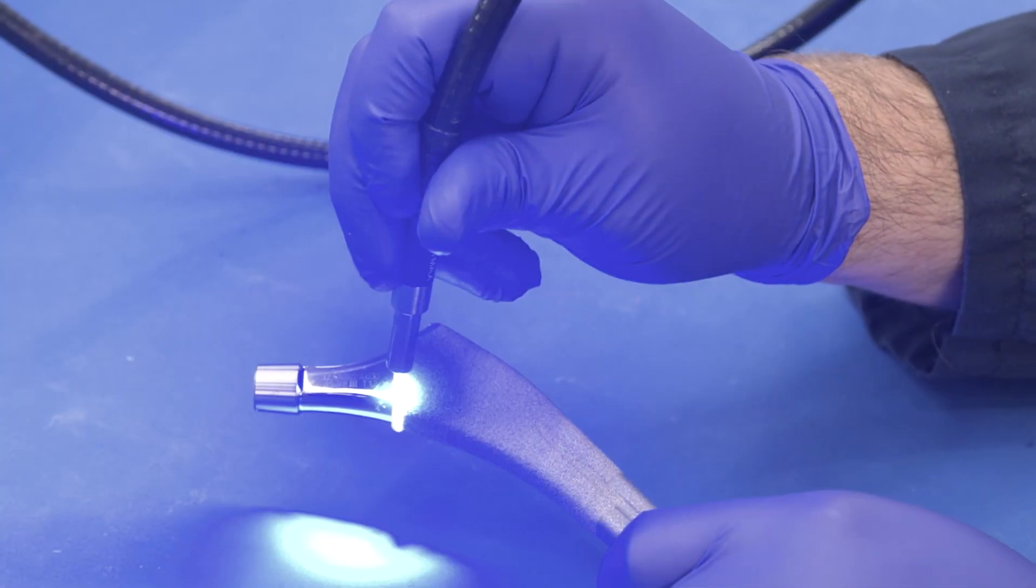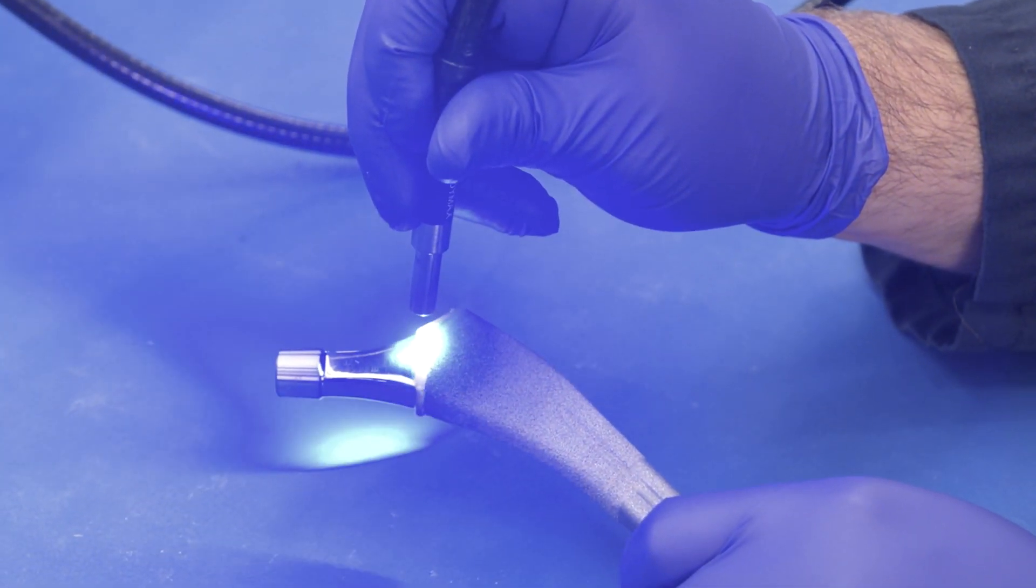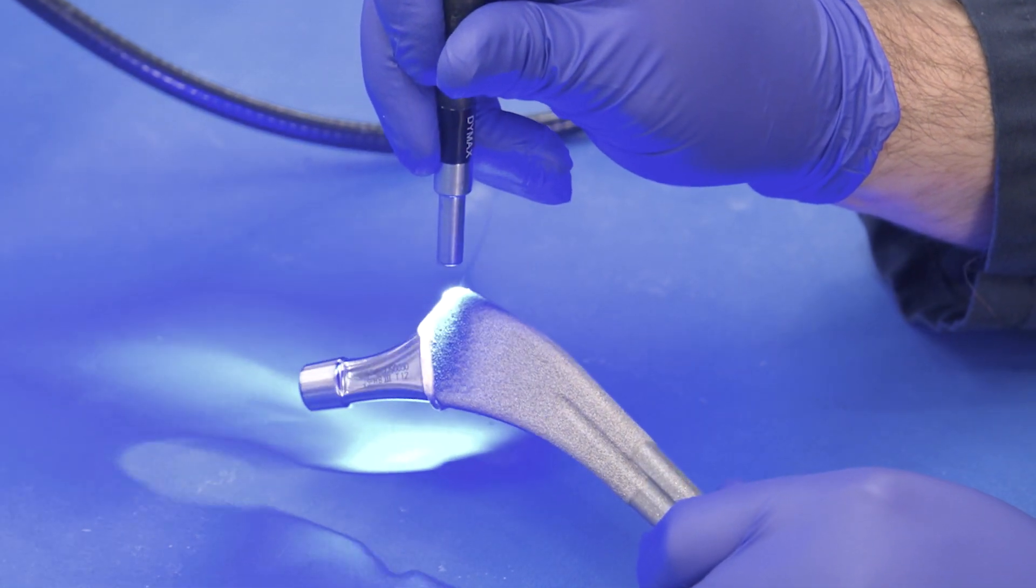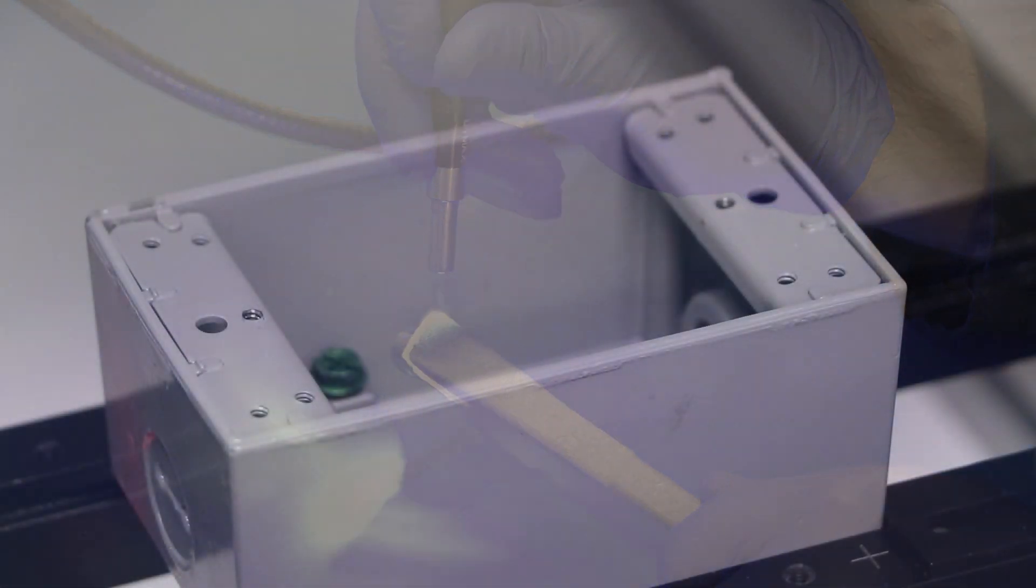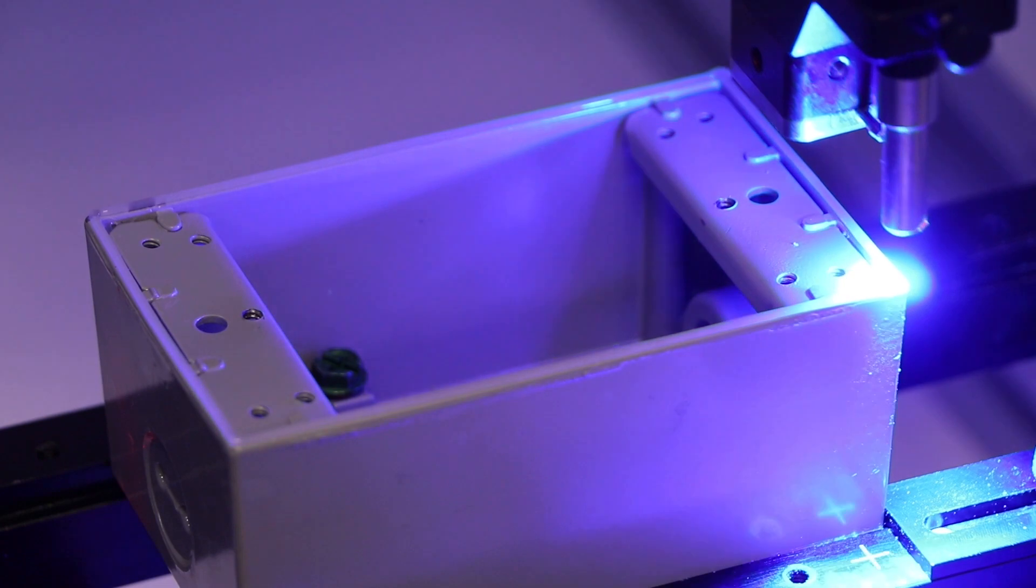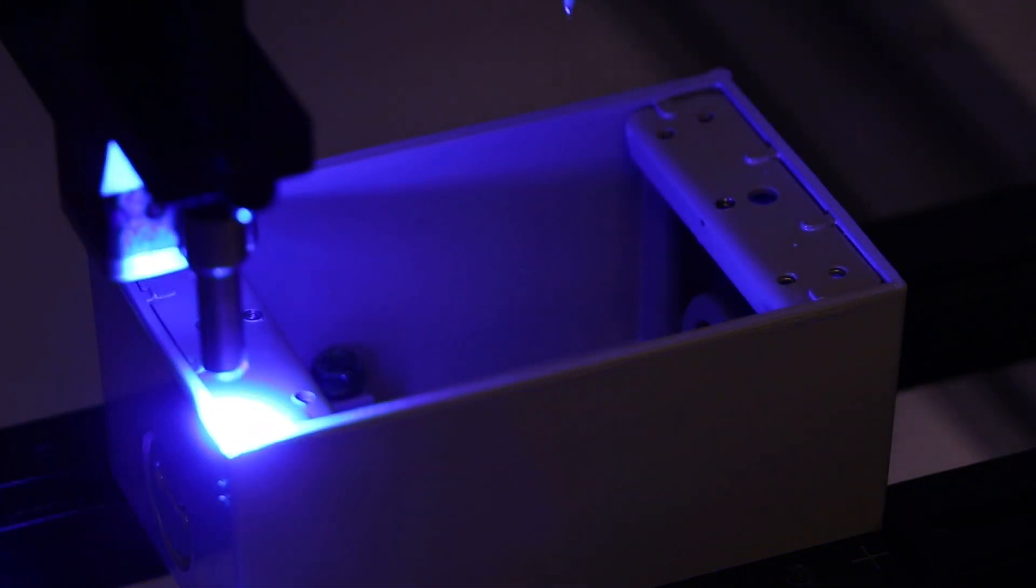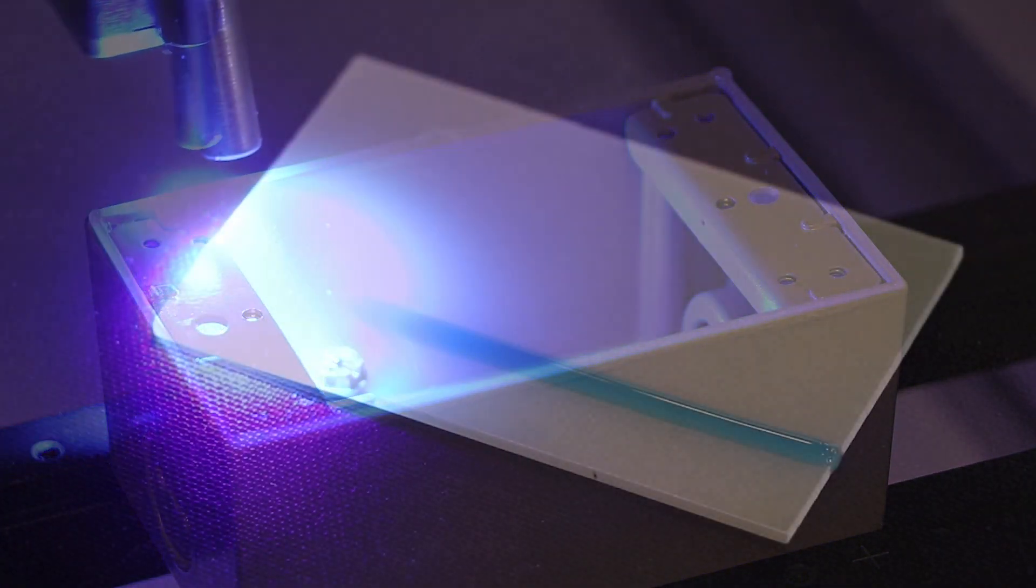Liquid light guides deliver targeted high-intensity UV light from a spot curing lamp to cure adhesives and coatings. They help deliver light to the appropriate spot of adhesive and are a critical component of the light curing process.